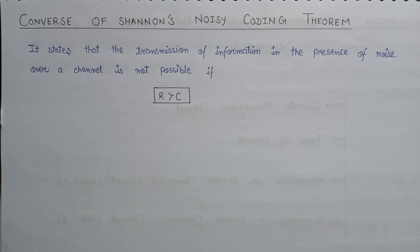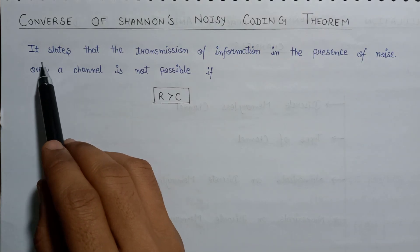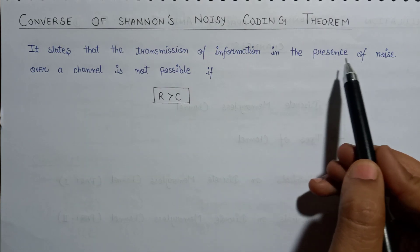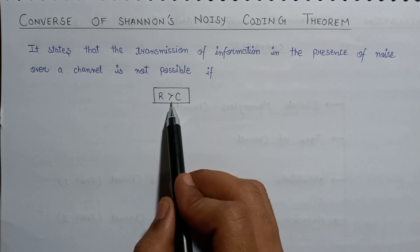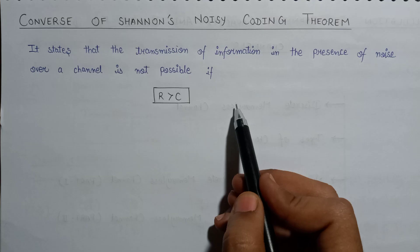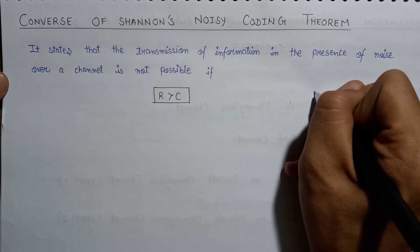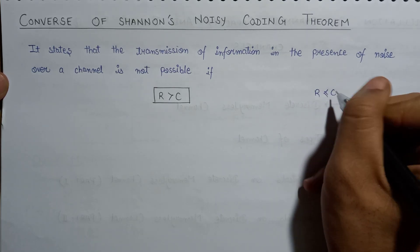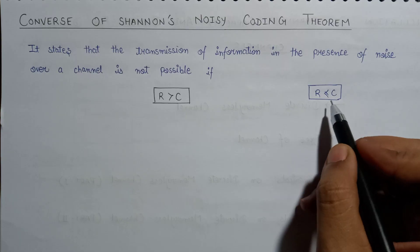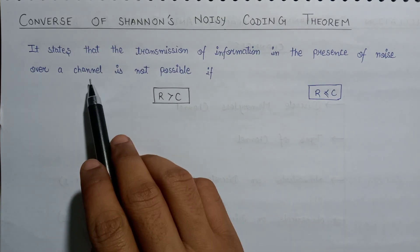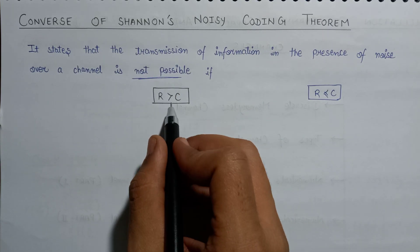Now let us look at the converse of Shannon's Noisy Coding Theorem. The converse says that the transmission of information in the presence of noise over a channel is not possible if and only if the rate of transmission is greater than the capacity of the channel. So while the theorem states transmission is possible when R is less than or equal to C, its converse states transmission is not possible when R is greater than C.